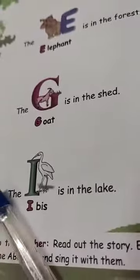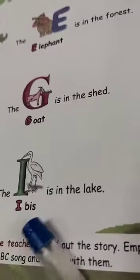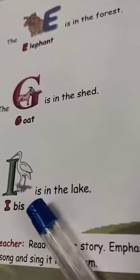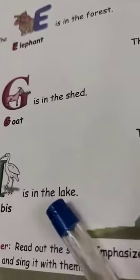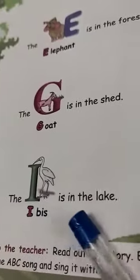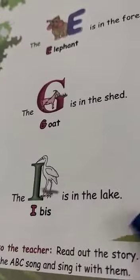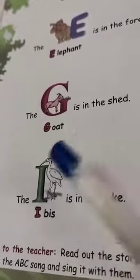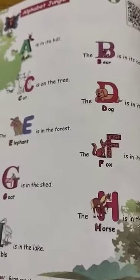Now: I-B-I-S, ibis, I-S I-N the L-A-K-E, lake. The ibis is in the lake. Ibis is a bird. It is in the lake. So this is what they have imagined and framed the alphabet jungle story.